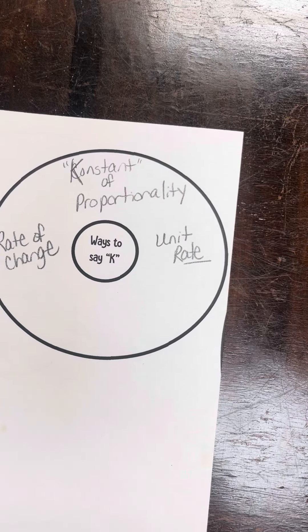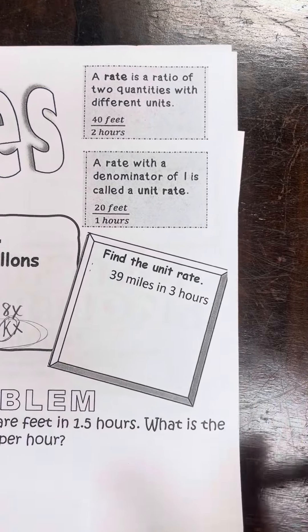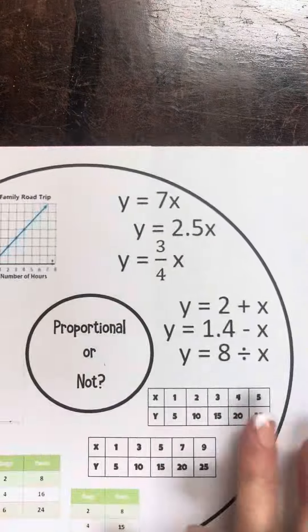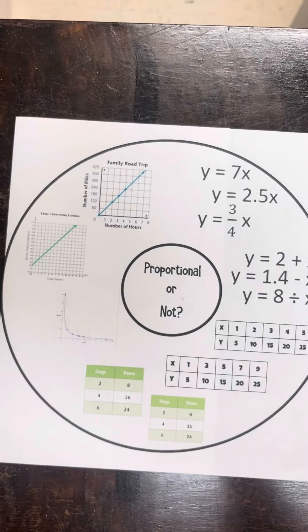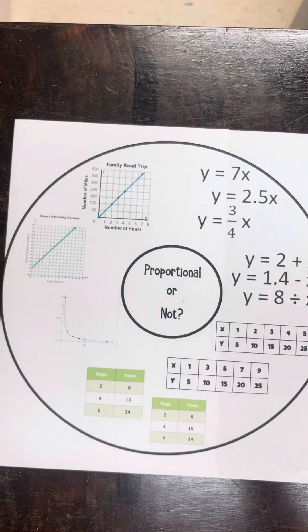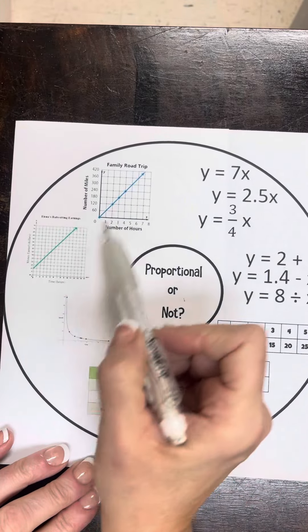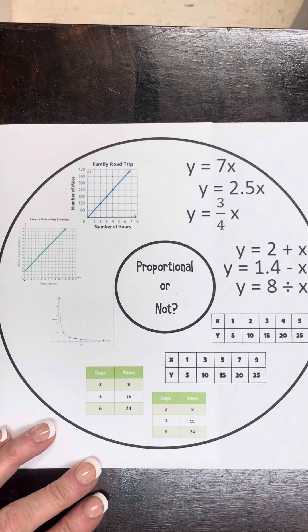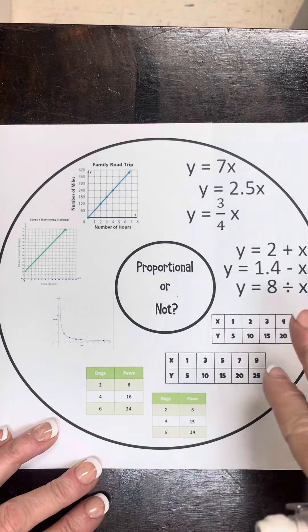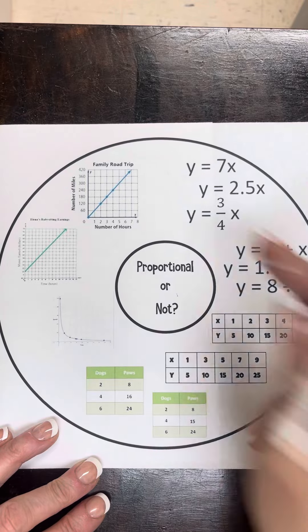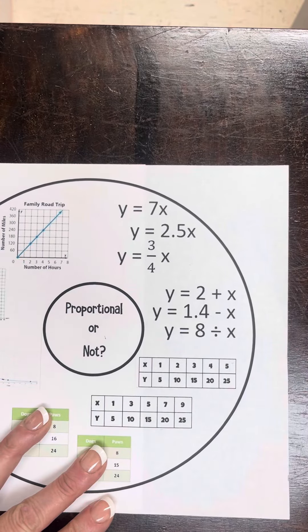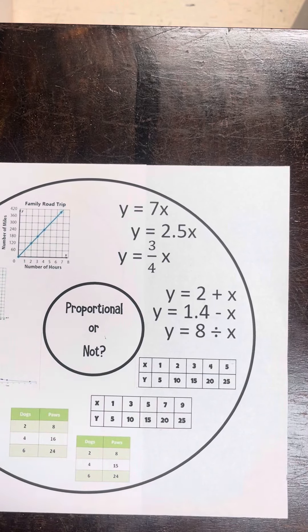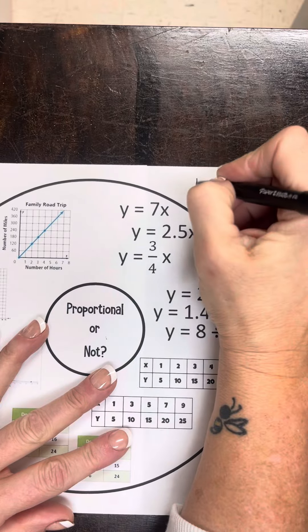We're going to look at what k looks like in these different forms. What does it look like in a graph? How do I recognize k — the constant of proportionality, the constant rate of change — in a graph, in a table, in an equation? We're going to start over here with the equation. Make sure you are getting all of this on your notes.